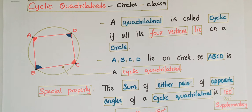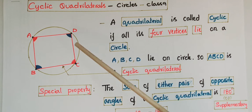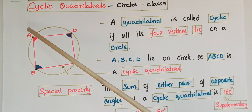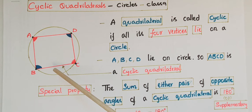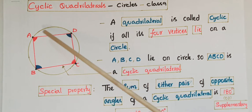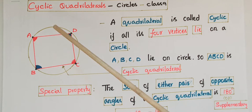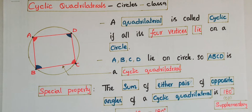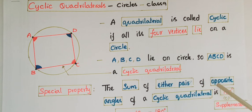Hello everyone, today I am going to tell about cyclic quadrilaterals. If in a quadrilateral all the vertices lie on a circle, then that is called a cyclic quadrilateral. For example, if you see this figure here, ABCD is a quadrilateral and all the vertices A, B, C, D lie on this circle, so ABCD is called a cyclic quadrilateral.